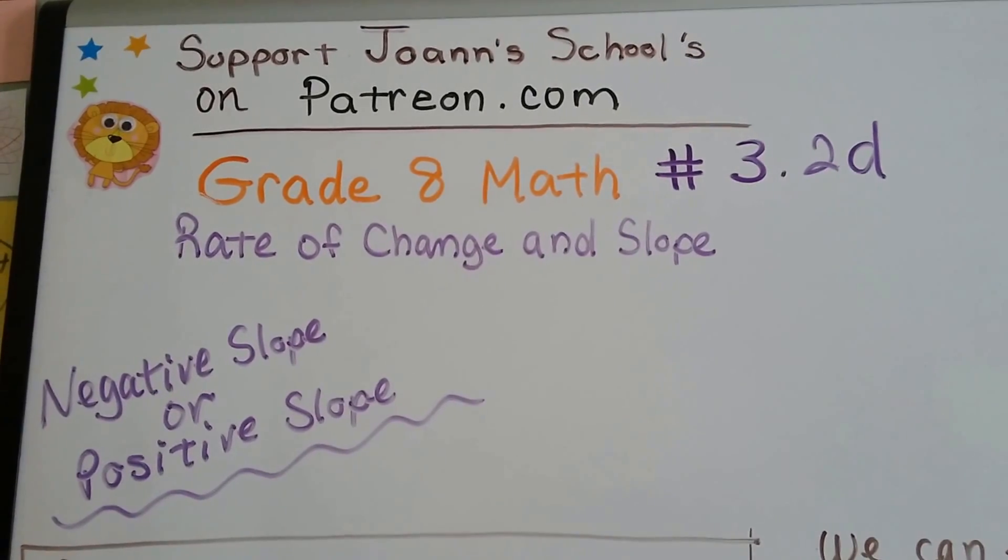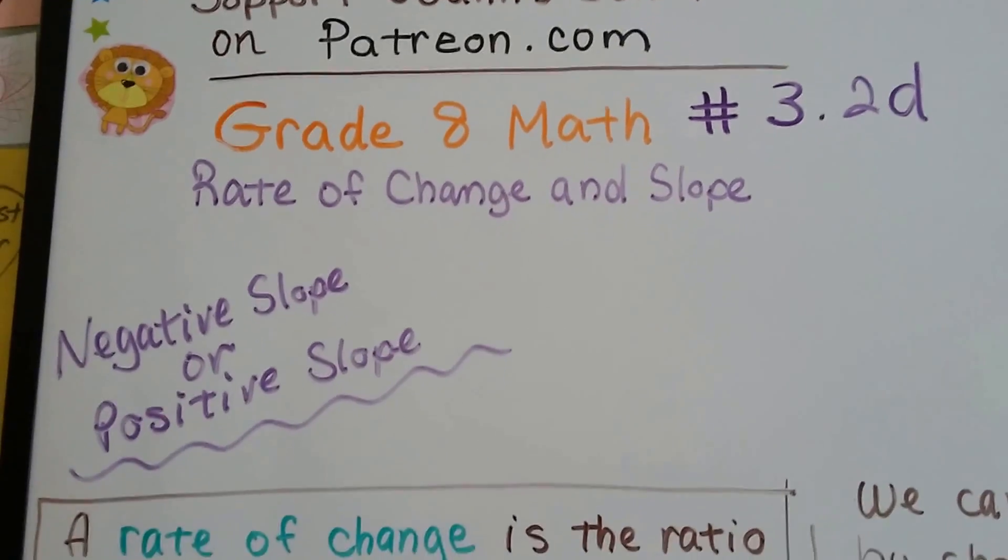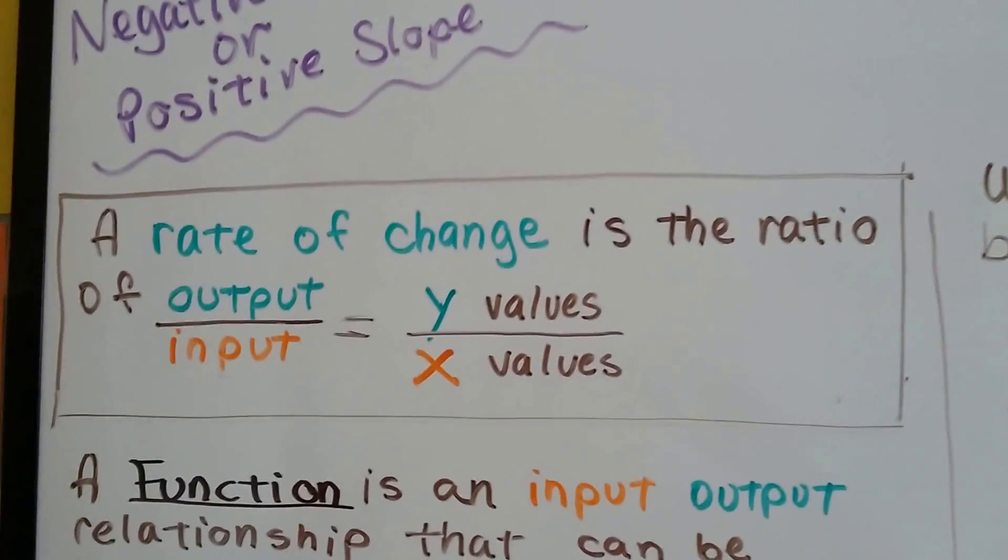Grade 8 math number 3.2d, negative slope or positive slope. I explained in the last video.